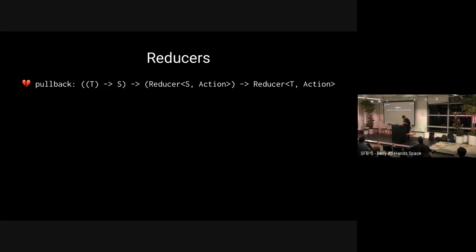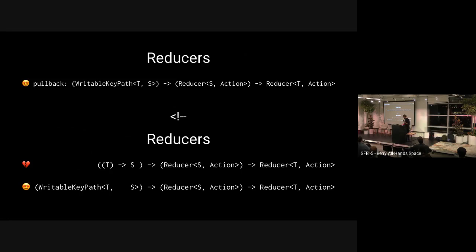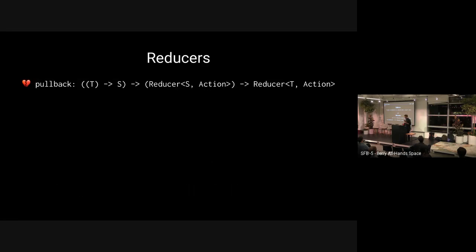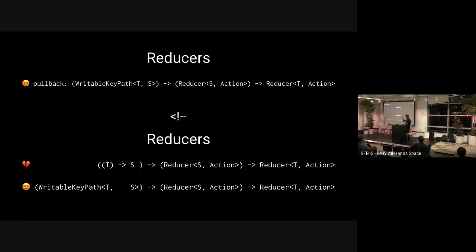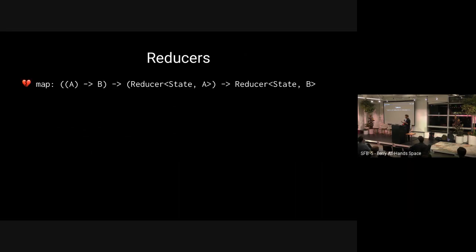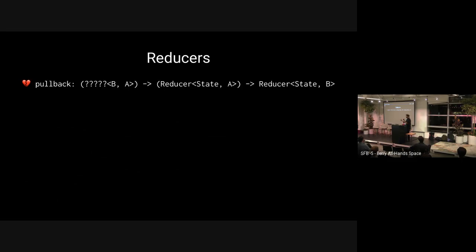Reducers do not support map, and they don't even support pullback in the naive sense — just because you have a transformation from T to S does not mean you can change reducers of S into reducers of T. But if you enhance things to use writable key paths from T to S instead of a plain function, all of a sudden that composition unlocks. The function with a plain transformation is impossible to implement; the function using writable key paths is possible. The same story plays out for actions — simple transformations aren't enough; you need something else, something even more exotic lurking in here.